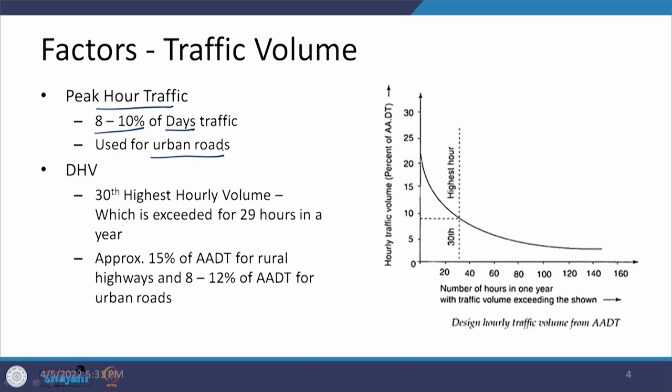Another factor is the Design Hourly Volume, DHV. This DHV can be found out on the basis of the 30th highest hourly volume. The 30th highest hourly volume means that it is that traffic volume — arranged from highest to lowest throughout the year — which is going to be exceeded only for 29 hours in one year.